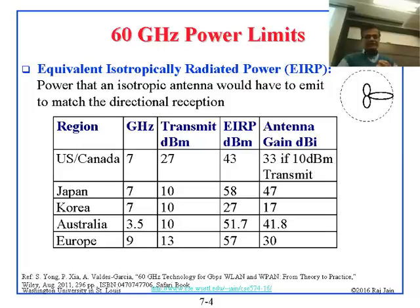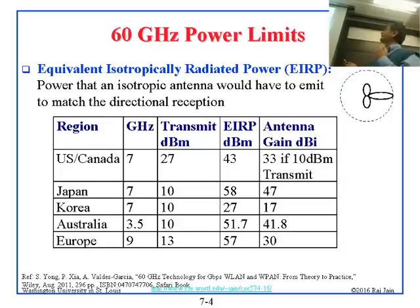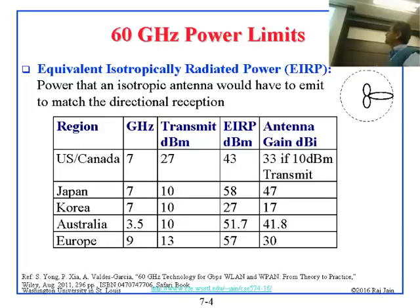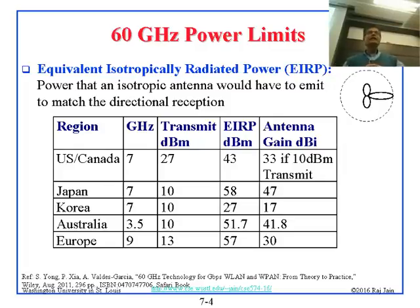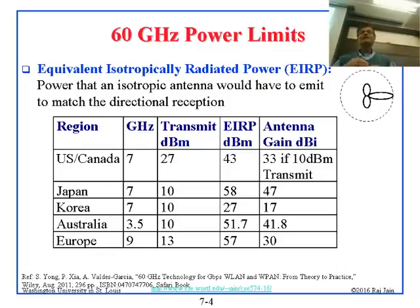The FCC put some limits, shown on this slide. They put a limit on EIRP — Equivalent Isotropically Radiated Power. Basically, they stand somewhere and measure how much power they receive, then assume you are sending that power everywhere. The limit is on how much power you would need to send isotropically to produce that received level.